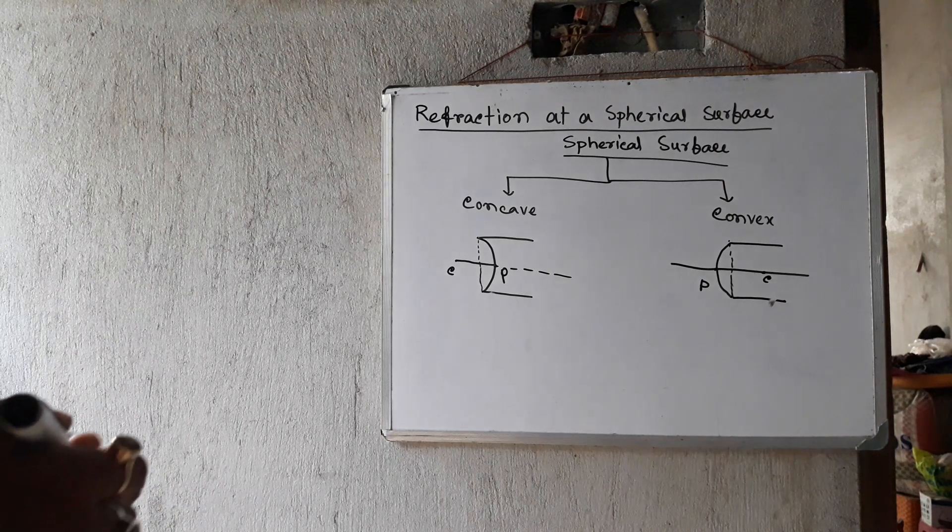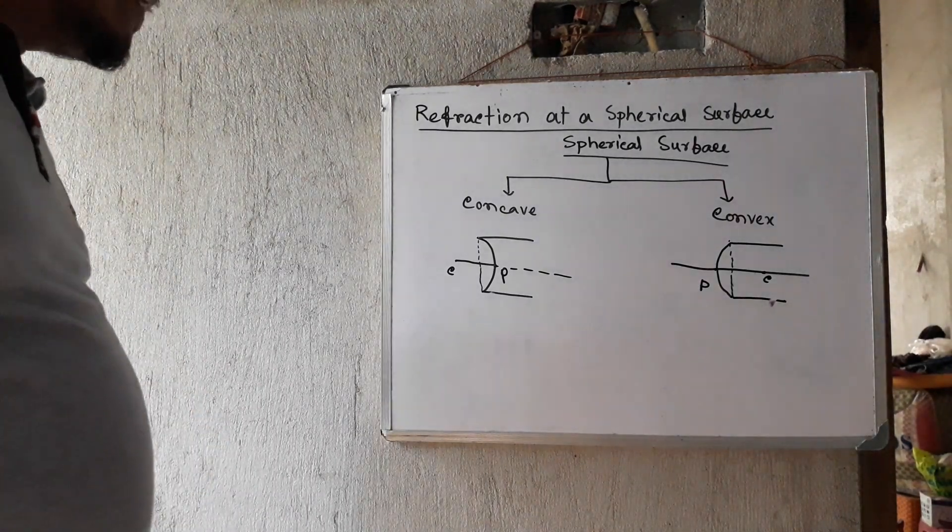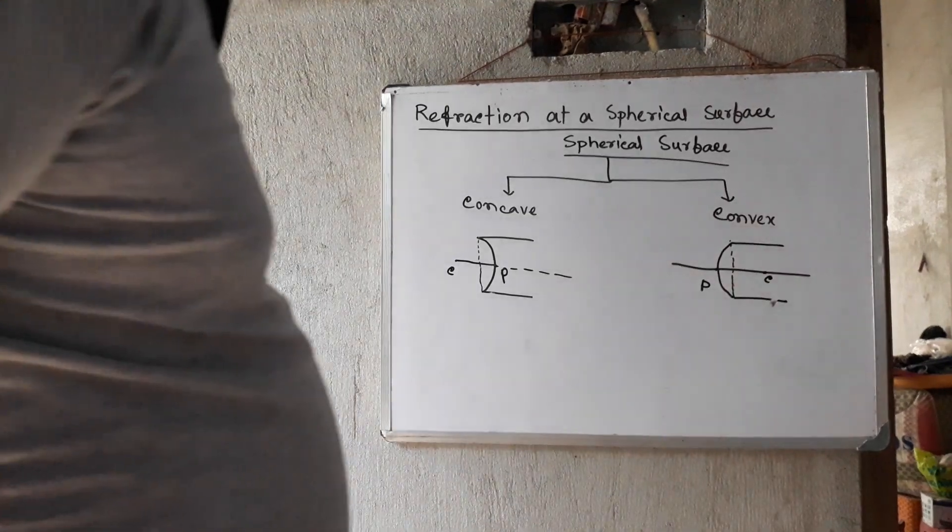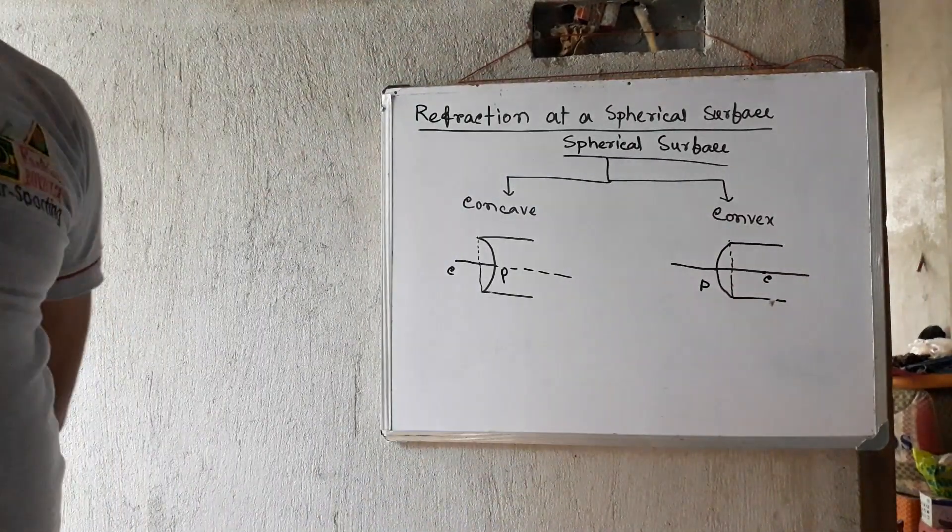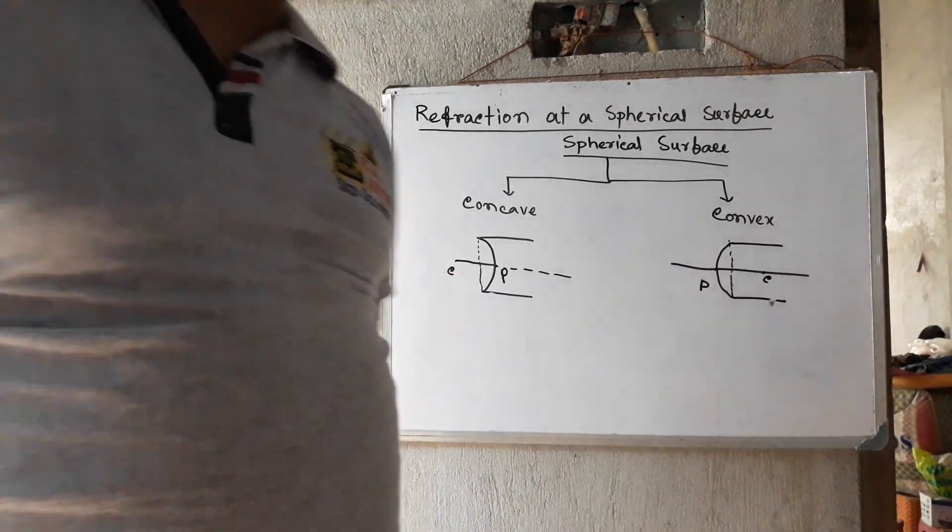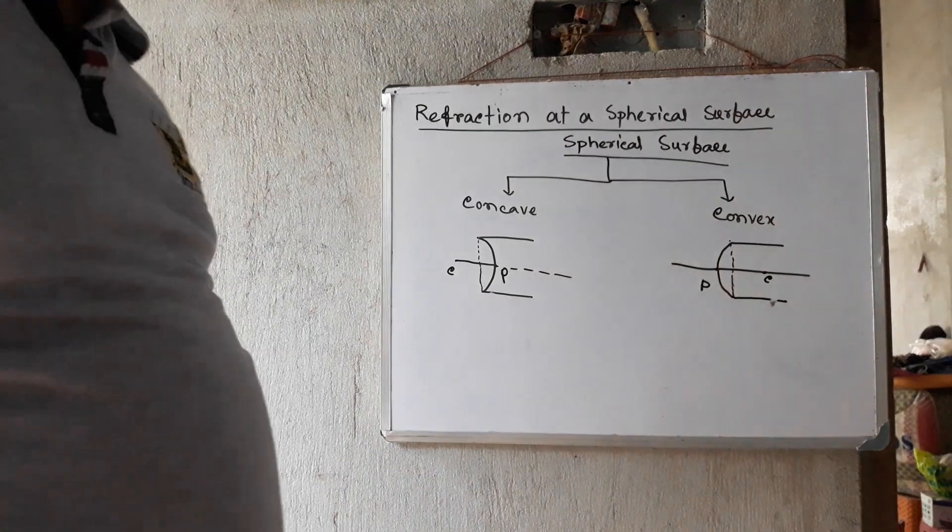This is the concave surface and convex surface. This is the center of curvature. Let's put it here.